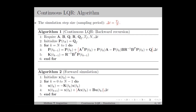Let's start by recording the algorithm for continuous LQR from lecture number 2. We denote the simulation step size or the sampling period as delta t, which is equal to tf divided by n. Here tf is the terminal time or time horizon for the continuous time simulation, and n is the time horizon in discrete time. We divide tf into n discrete instants, which we denote by tk, and the time period between each instant will be delta t.